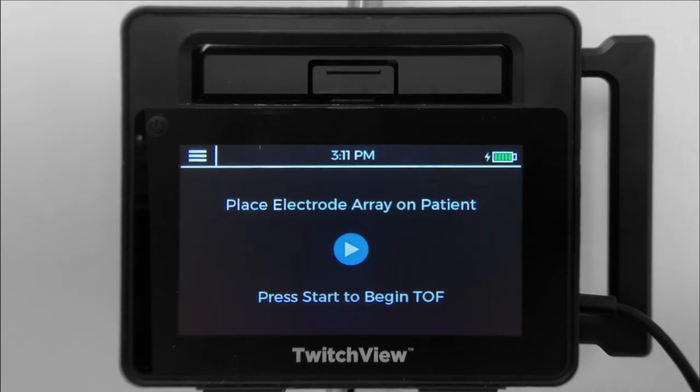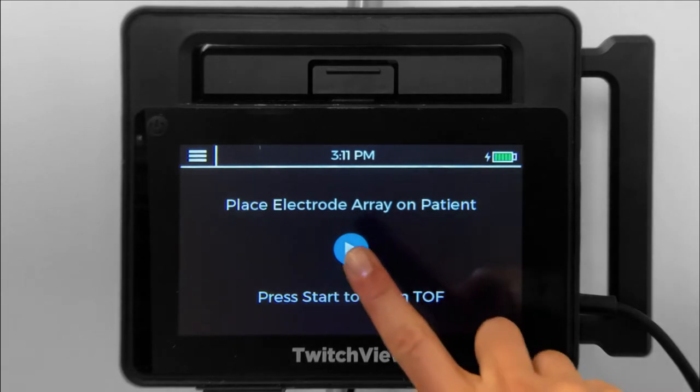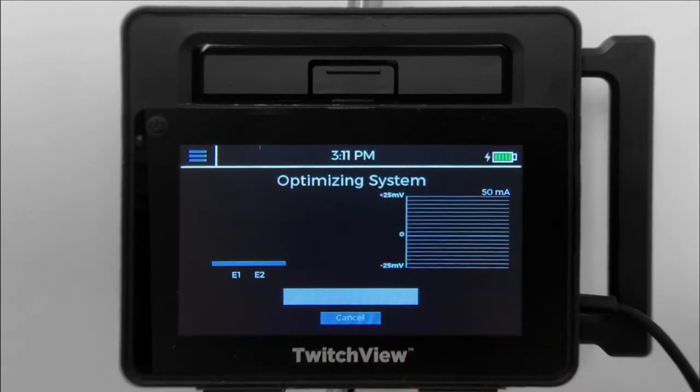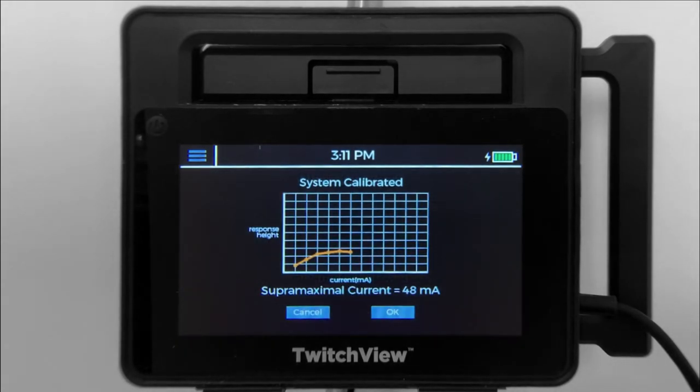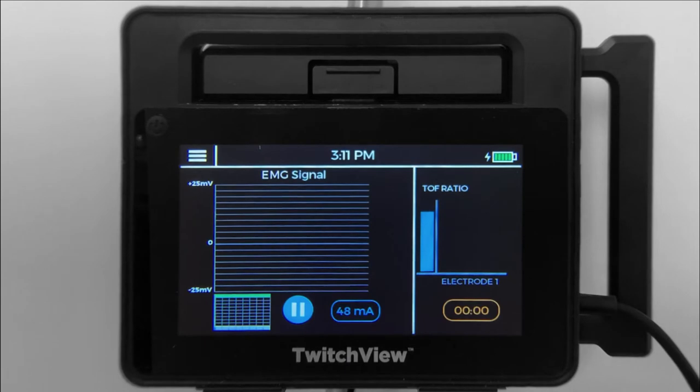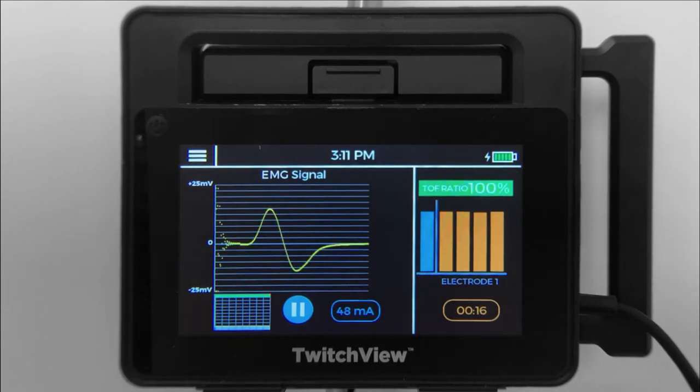After the patient is anesthetized but before administering neuromuscular blocking agent, press play on the TwitchView monitor. The monitor will immediately begin stimulation as it determines which EMG recording electrode provides the best signal, sets the supramaximal current or optimal stimulating milliamperage, and begins TRAIN-4 monitoring at 20-second intervals.